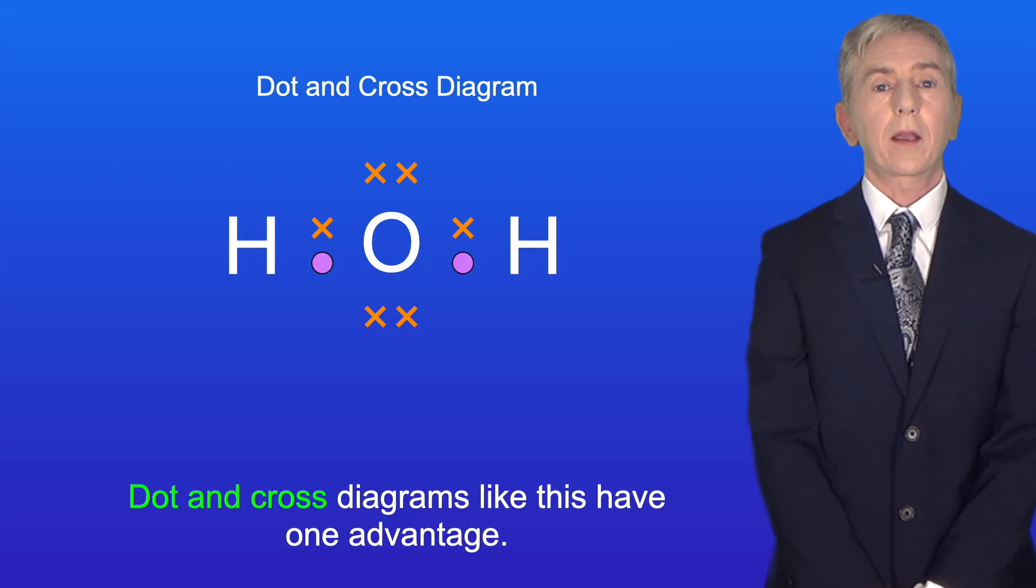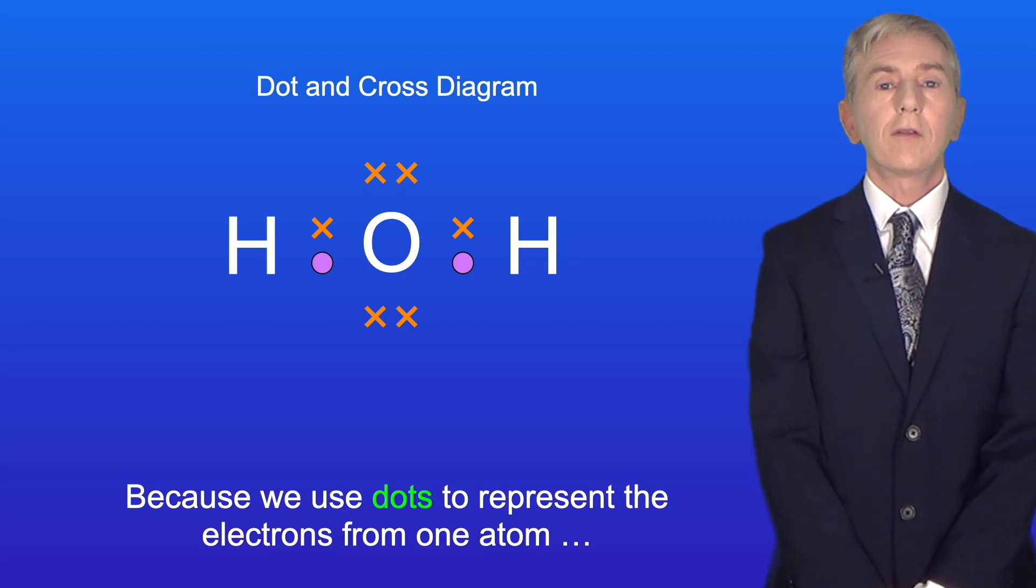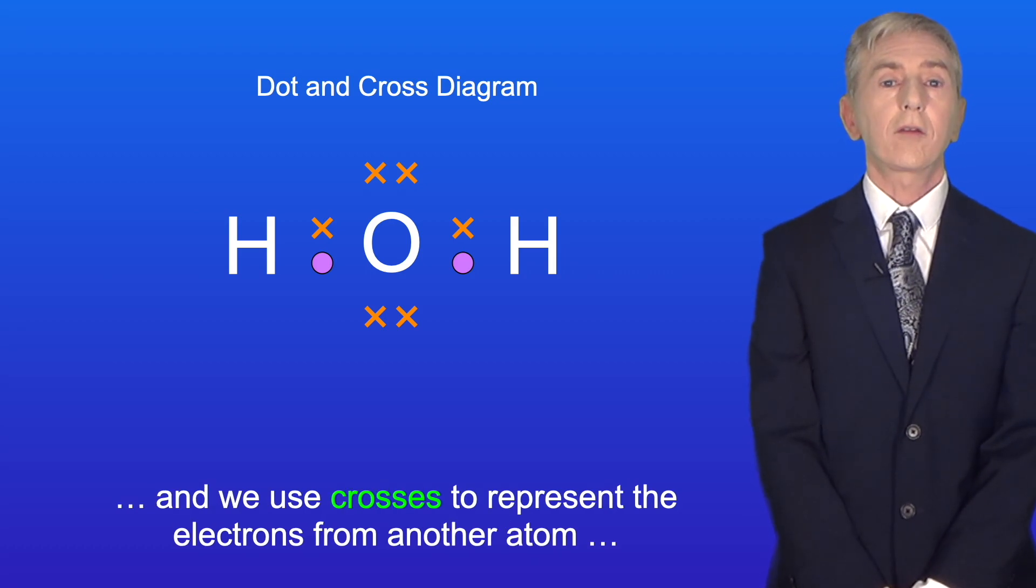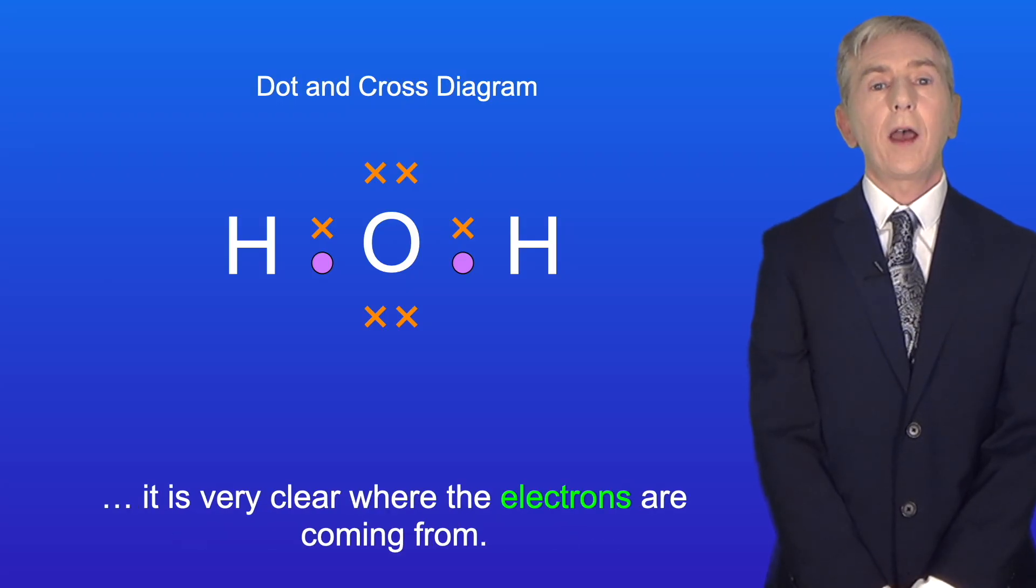Dot and cross diagrams like this have one advantage. Because we use dots to represent the electrons from one atom and we use crosses to represent the electrons from another atom, it's very clear where the electrons are coming from.